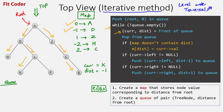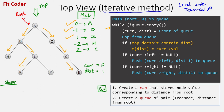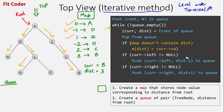Next, current becomes P and distance is one. We pop P comma one. The map already has an entry for one, so the if condition is false. Left and right of P are both null. Next, current becomes B and distance is three. We pop B comma three; the queue is now empty. No key for three exists, so we create key three mapping to B. Left and right of B are both null, so those conditions are false.